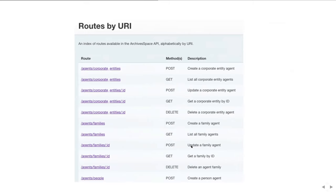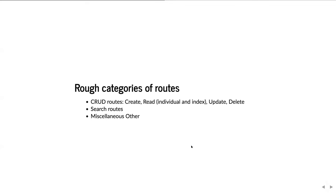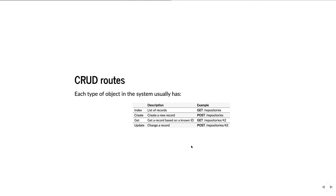Here are some routes by URI. The agents/corporate_entities one with method POST is how you create a corporate entity agent. There are rough categories of routes in the system. There are CRUD routes — meaning create, read, update, and delete — which is a generic convention for web applications managing records. There are search routes for searching through multiple record types. And then there are miscellaneous other routes, like the route to merge agents, the route that gives you a feed of deleted items, and routes that get you PDF or EAD representations of objects in the system.